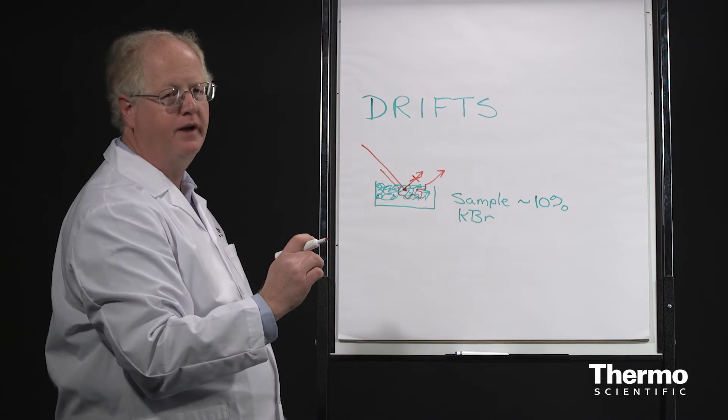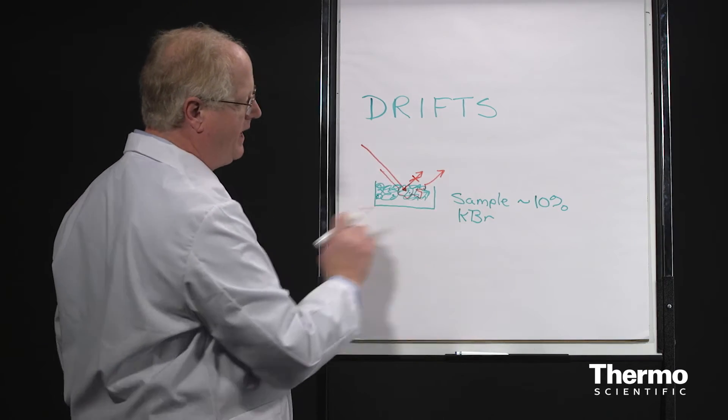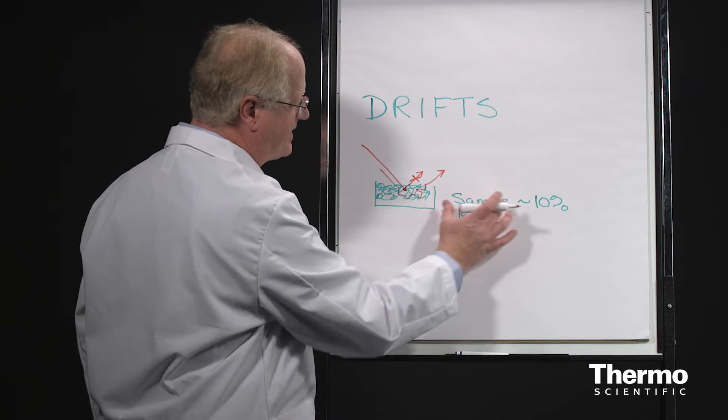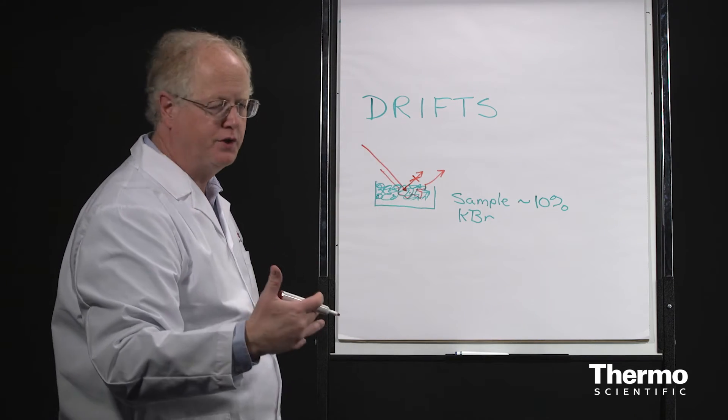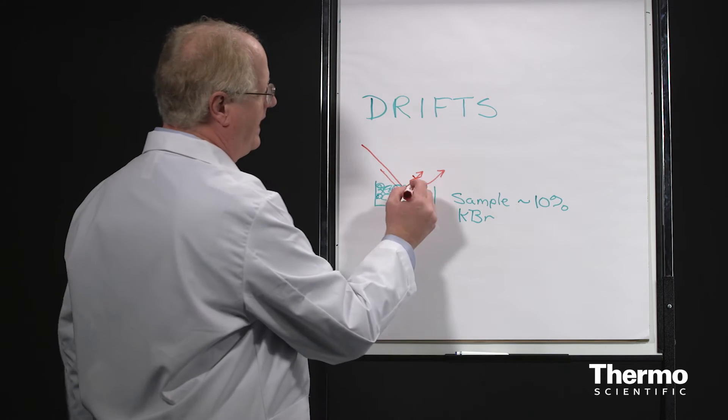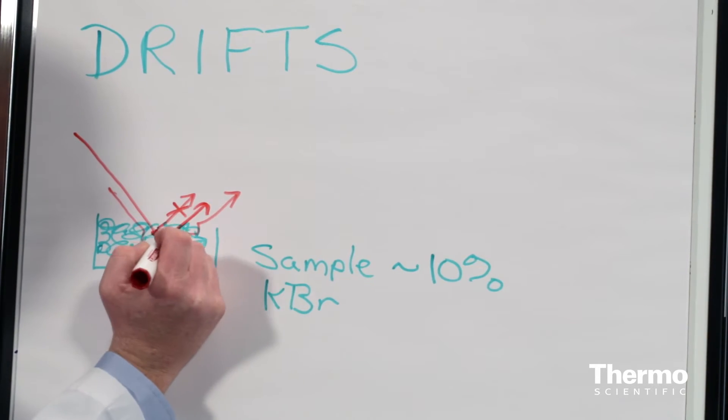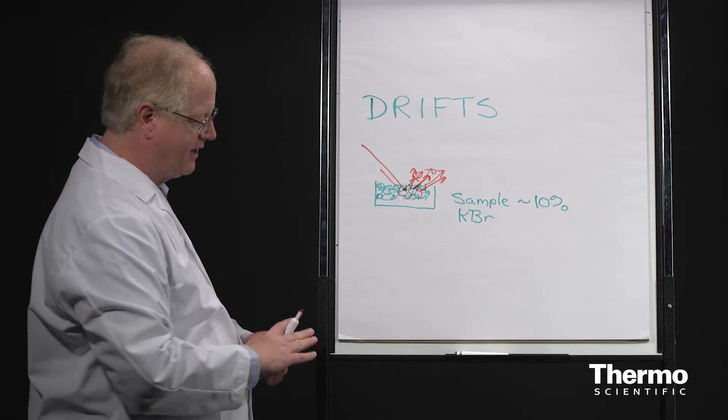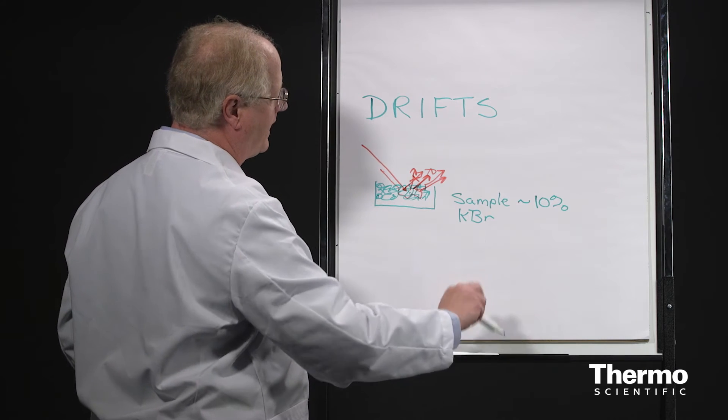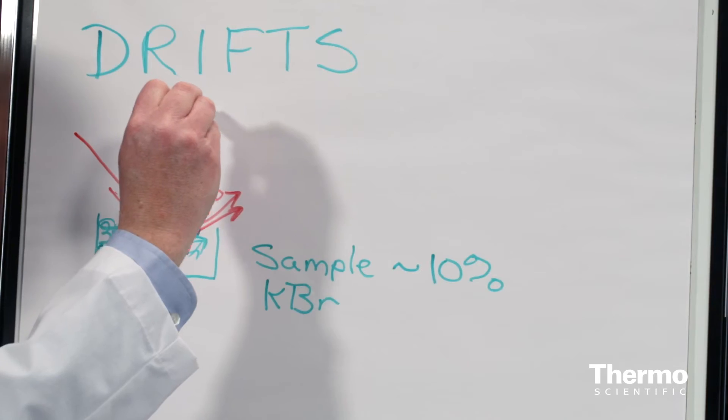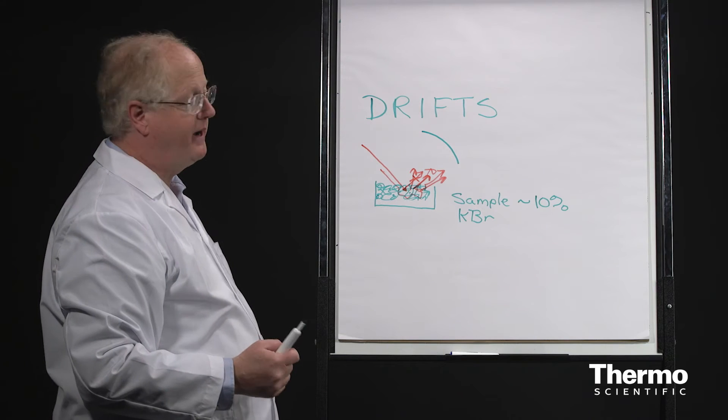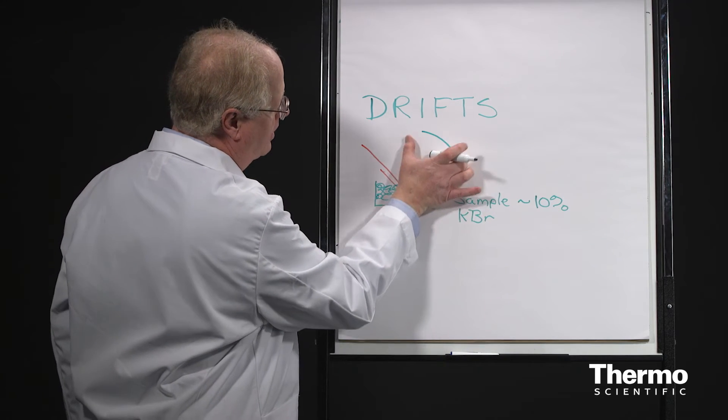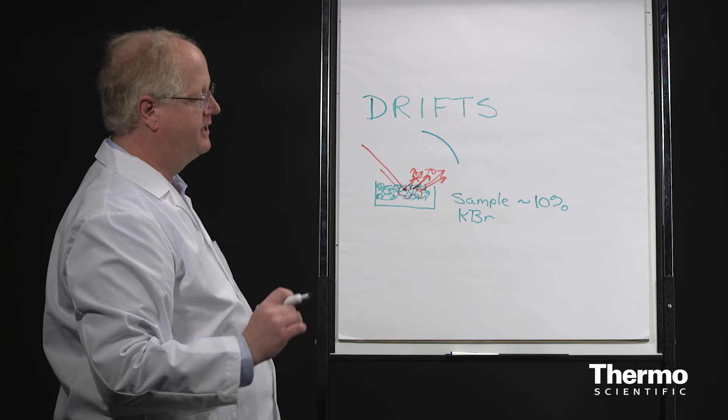And while it's bouncing around, it's hitting these particles of KBr and occasionally passing through a particle of the sample. And as it's doing that, it's storing up, so to speak, the absorbance of the sample. And then that diffusely reflected light, which comes back out, is actually carrying the signal. And it's this diffuse light, which is then gathered by a mirror, what we call a compound parabolic collector or a CPC. That mirror collects that light and directs it onto the detector.